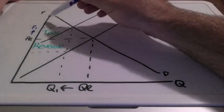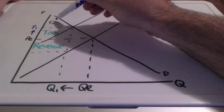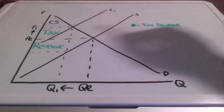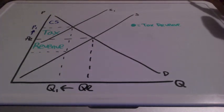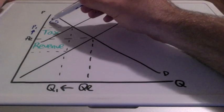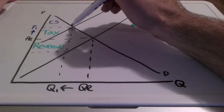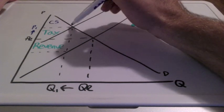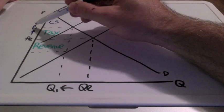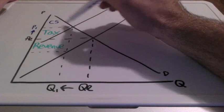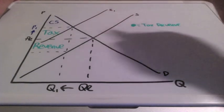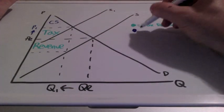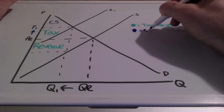When prices go up, this results in items being more costly for consumers. So this entire area here, we find our demand curve with our new price. This entire area represents consumer surplus.